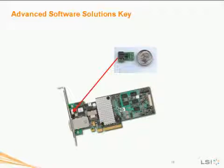So how does the advanced software key work, or how do you activate the software on the MegaRay controller? Today we offer a hardware key — basically a T-stock with a two-pin header. You connect that device to the MegaRay card as illustrated here, and once you power on the RAID card, the feature — either FastPath, Cascade, or both — will be enabled on your system.